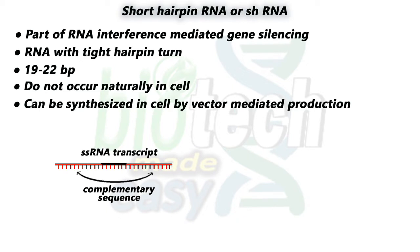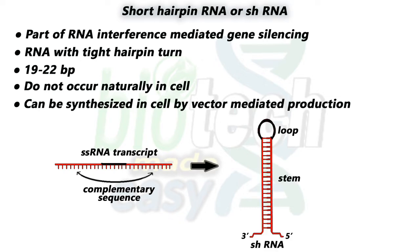Here you can see the structure and formation of shRNA. Look at the single-stranded RNA transcript — it has complementary sequences which fold back on itself and form stem and loop regions of shRNA. The stem region has complementary antisense and sense strands in which pairing takes place, whereas the loop has unpaired nucleotides.